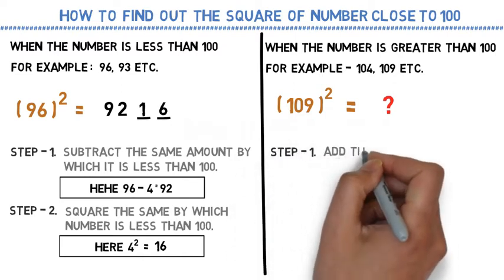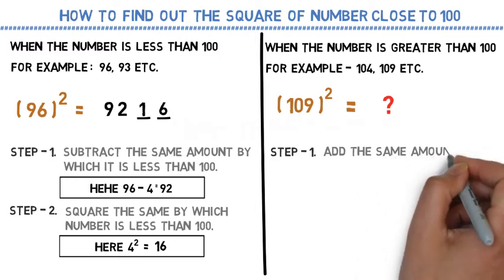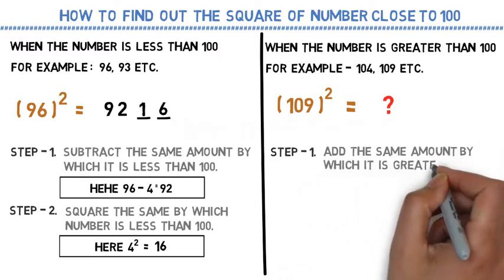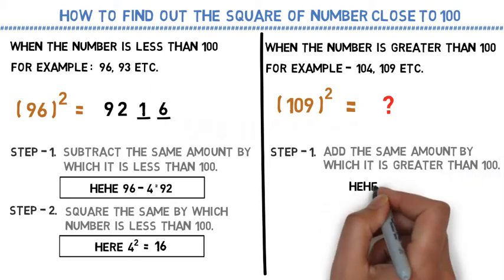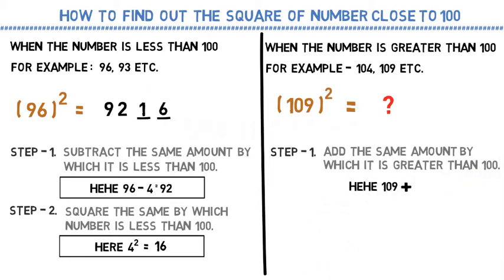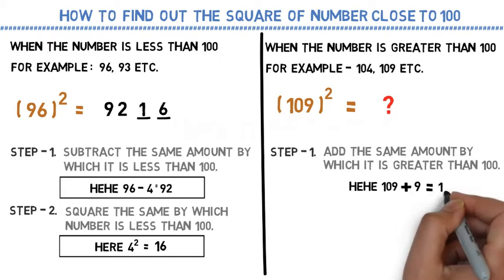This is also same as the previous one, but since the number is greater than 100, you need to add by which it is greater than 100. 109 is 9 greater than 100. We will add 9 more to 109. It would become 118.